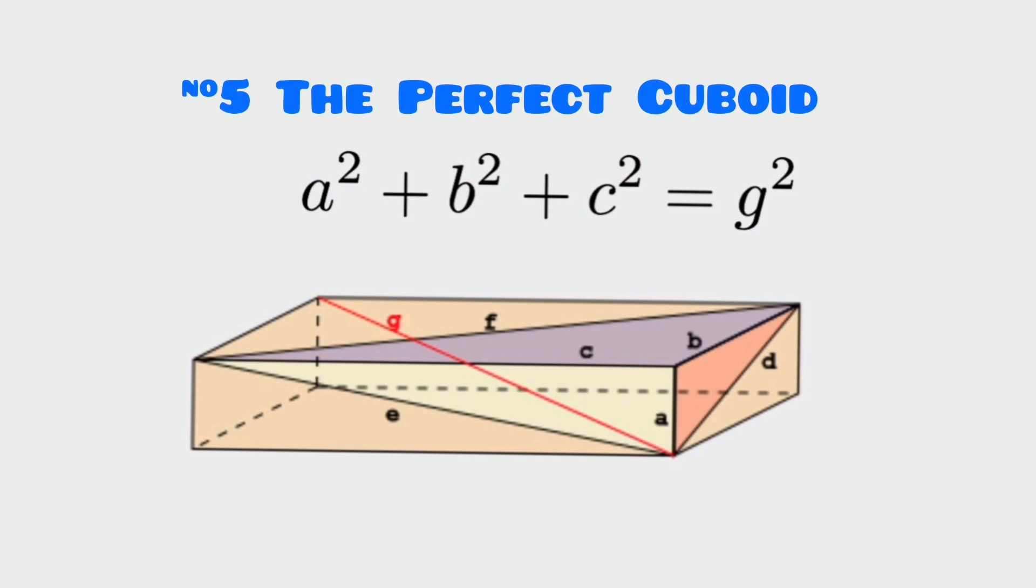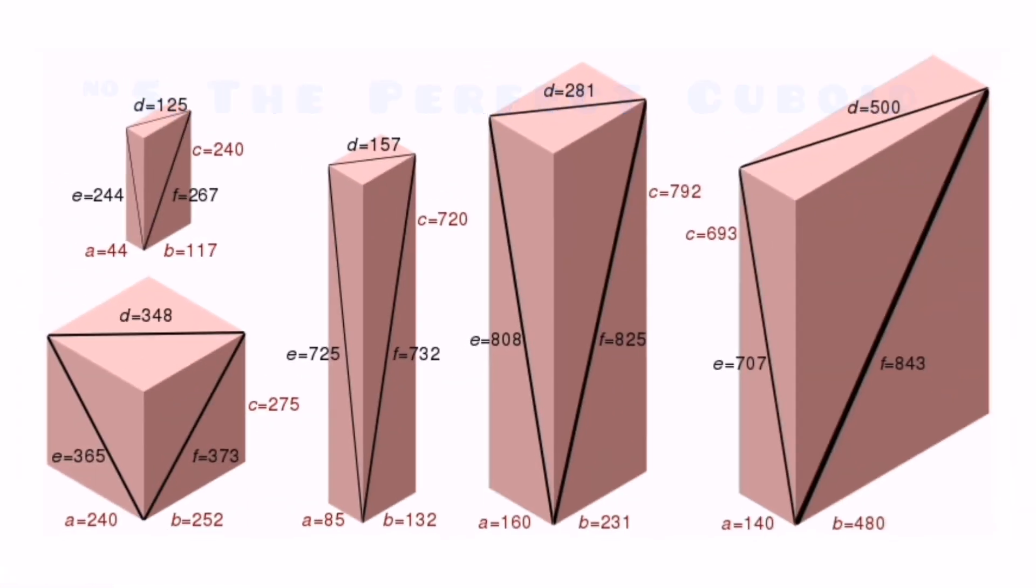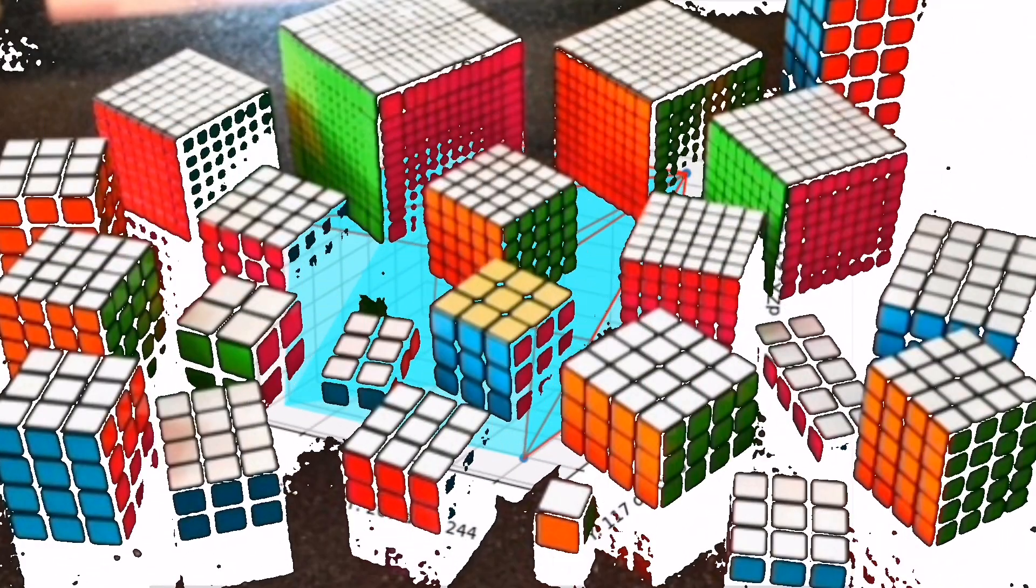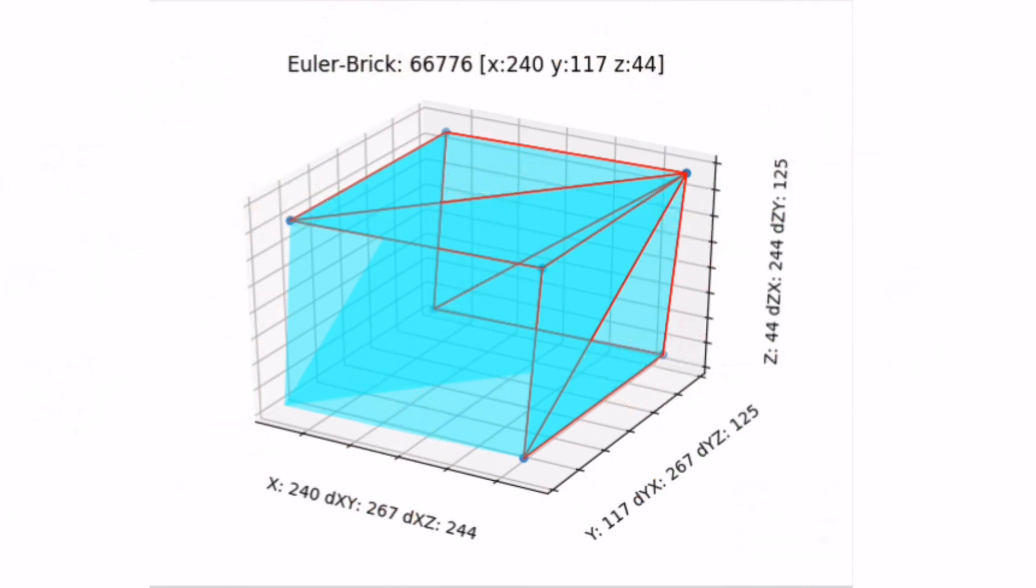Number 5. The Perfect Cuboid. A perfect cuboid, or a rectangular box, is a cuboid in which all of the edges have integer dimensions, and in which the diagonals on all three sides are also integers. It hasn't been proven if such a cuboid exists.